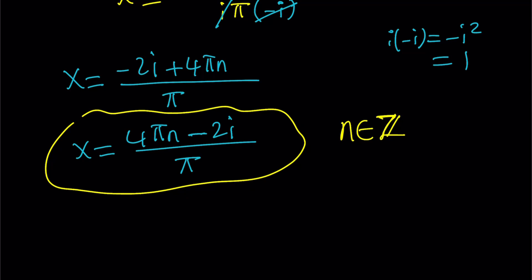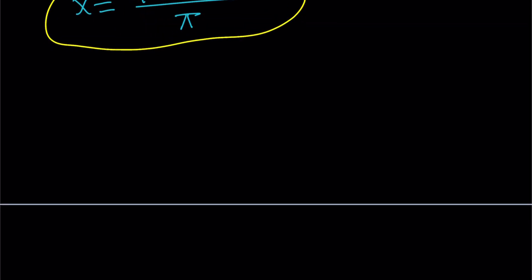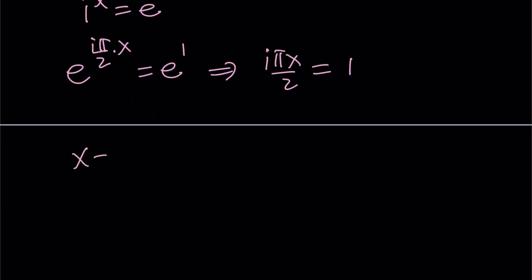So we could also look at it from a different perspective. Kind of like I take a shortcut. Instead of going through all this, we could also do the following. We have this equation, i to the power x equals e, right? And then think about it. I could just replace i with e to the power i pi over 2 and then multiply by x. And that's going to be e. Instead of writing the e on the right-hand side in polar form, let's just leave it at that and write this as e to the power 1. From here, we get i pi x over 2 equals 1. And then we can isolate the x in the same way as before.